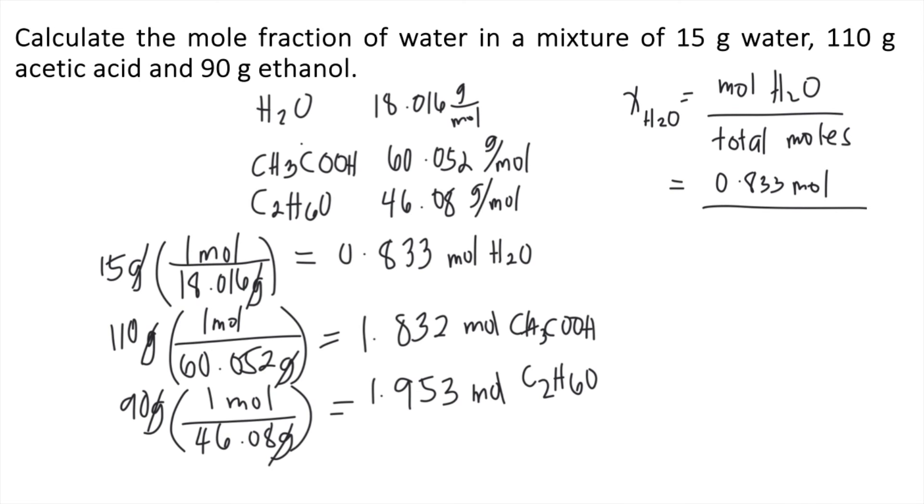In the mixture, we have three substances: water, acetic acid, and ethanol. So all you have to do is to get the total of the three. So 0.833 plus 1.832 plus 1.953, and this will give you a total of 4.618 moles.